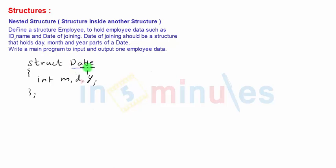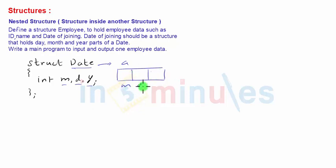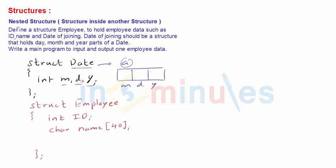To begin, we define a structure named 'date' — this becomes a user-defined type that holds three parts: d, m, y (day, month, and year). If you define a structure variable, say 'a', of type date, it will have three parts which you can access as a.m, a.d, or a.y. But we don't want a separate structure — we want that structure as a part of our employee structure. So we define 'struct employee,' which again becomes a new user-defined type.